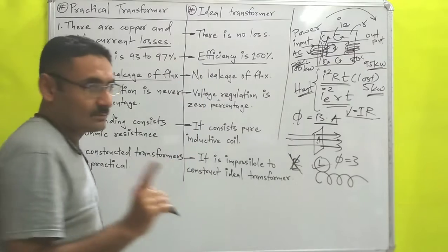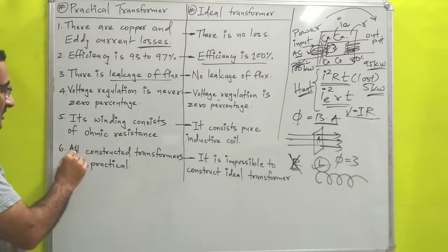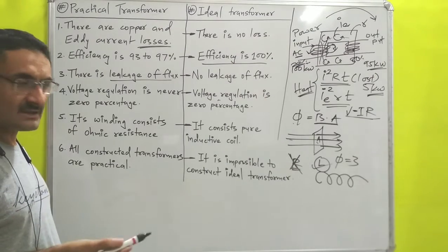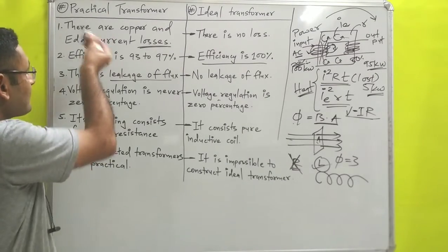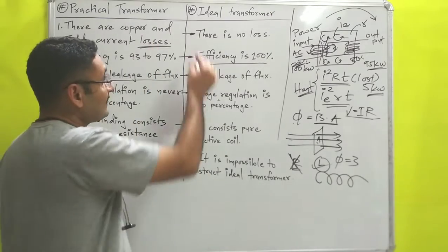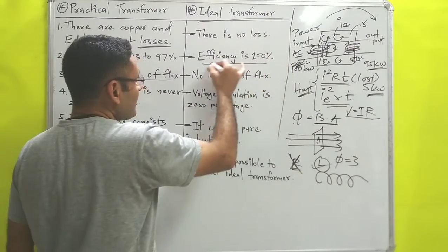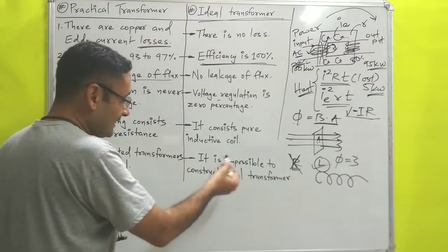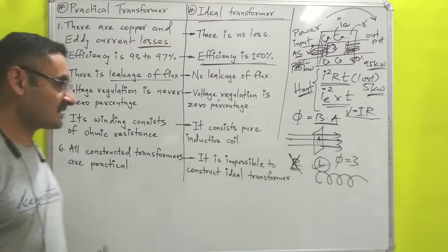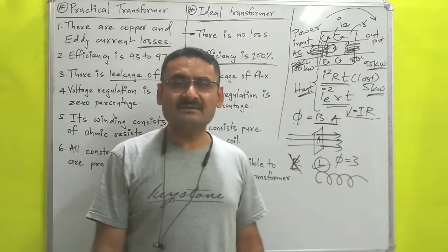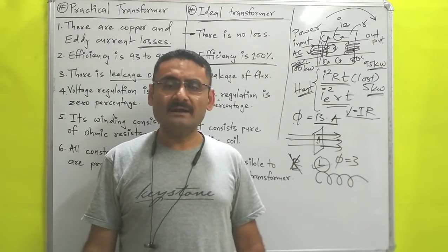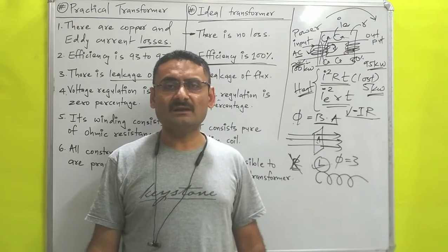Finally, all constructed transformers are practical transformers — whatever transformer we use has efficiency less than 100%. An ideal transformer with 100% efficiency cannot be constructed, so it is impossible to build. This is all about the basic differences between ideal and practical transformer. Thank you very much.